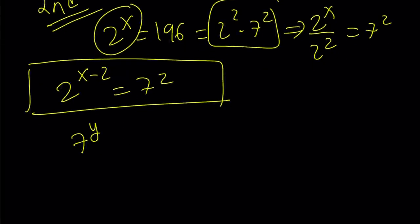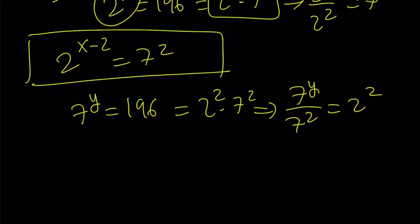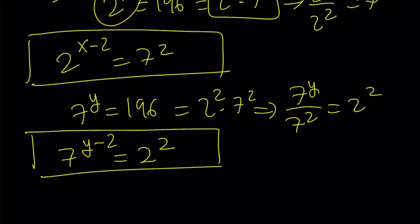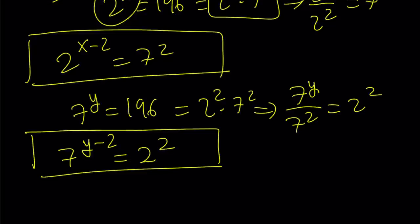And for the other one, 7 to the power y is 196, which is 2 squared 7 squared. From here, 7 to the y divided by 7 squared is going to be 2 squared. And if you use the power rules of exponents, 7 to the power y minus 2 is just going to be 2 squared. So, I have two equations that I can use, but the question is, how can I use them? Well, here's what I can do. I can go ahead and isolate one of these numbers. For example, how about isolating 7 here?